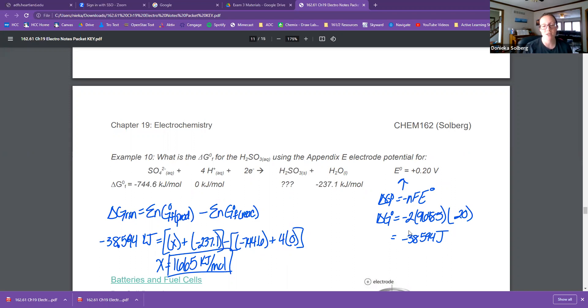And so I can plug that in for the delta G not of the reaction and solve for this missing delta G formation that I don't have, okay? So I have that equals, and then I'm going to do products. So the missing one plus the water one minus the reactants. So this one, this, this one.